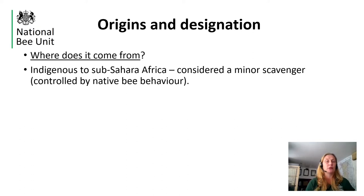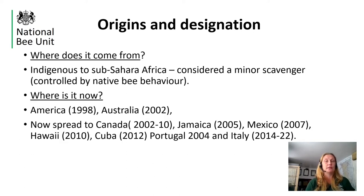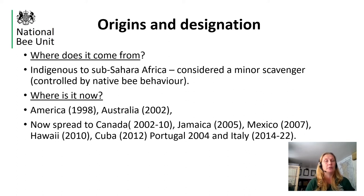Unfortunately, international trade has spread Small Hive Beetle globally. It was introduced to Portugal in 2004 in a consignment of queens from the US but it was very rapidly detected and eradicated. This was the first time Small Hive Beetle was present on mainland Europe until 2014 when it was detected in southern Italy in the Calabria region. The Italian authorities initially tried to eradicate the incursion by destroying infected hives and treating the soil in the apiary to kill Small Hive Beetle pupae.